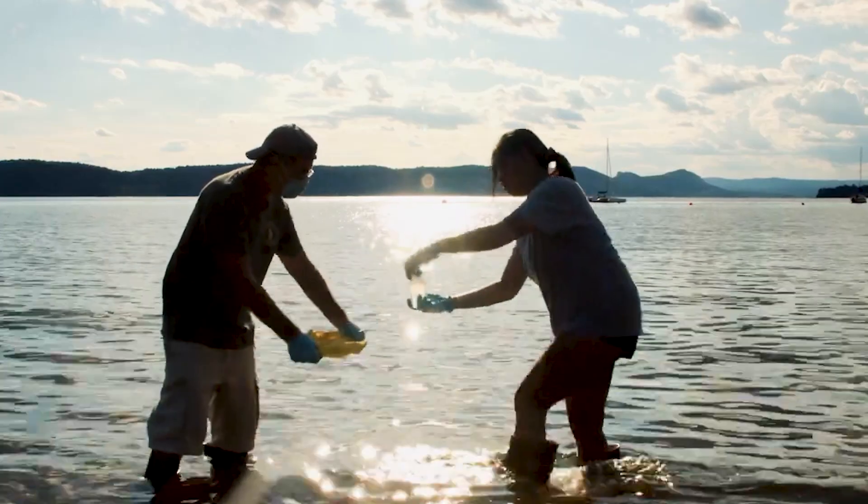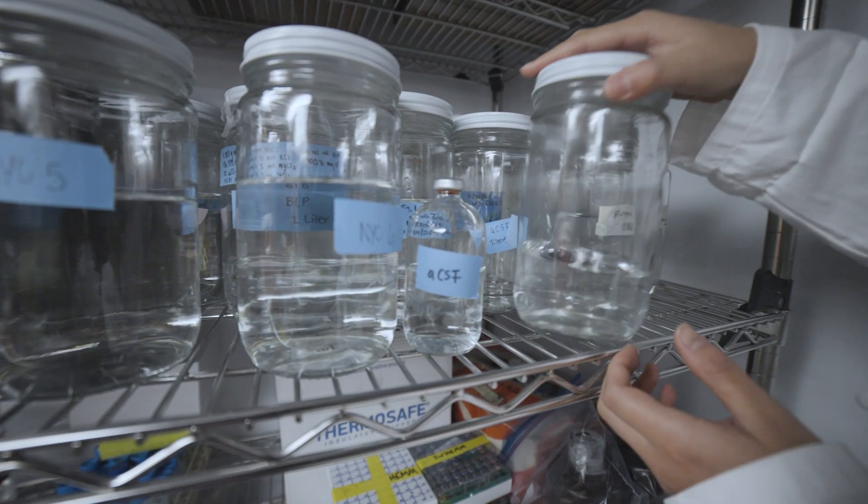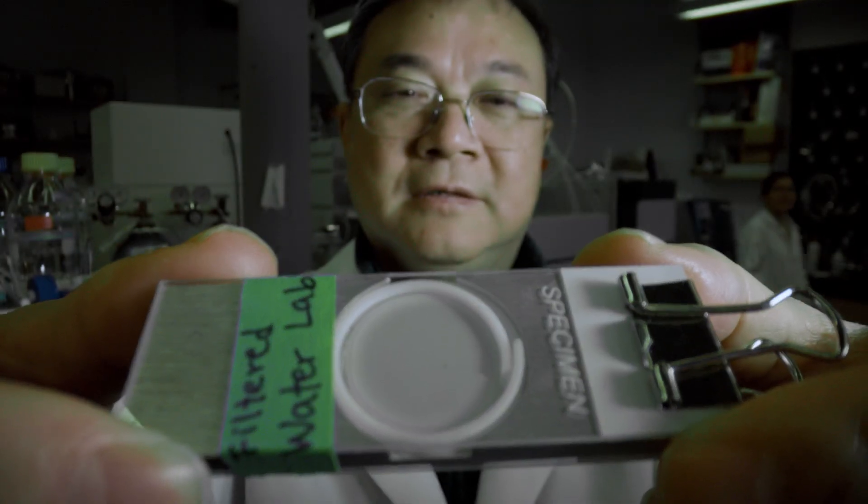In order to really understand microplastics, you need to figure out their source. So when we go to the field, we collect environmental samples into glass containers, bring them back, filter them, and then do the measurement.